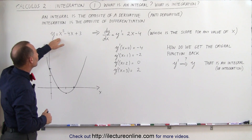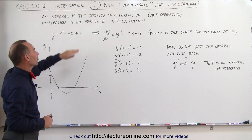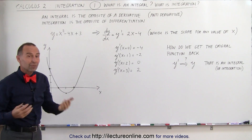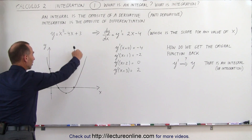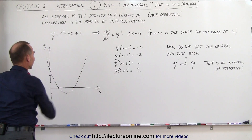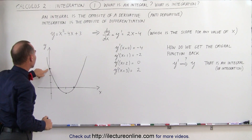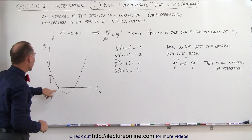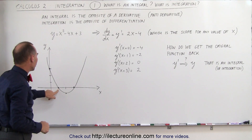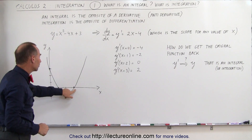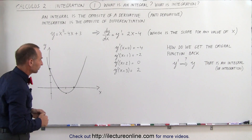Let's start with the equation y equals x squared minus 4x plus 3, a simple quadratic equation. If we were to graph it, it looks just like this. It goes to the y-axis at x equals 3, and it goes to the x-axis at x equals 1 and at x equals 3. So there are two real roots here.